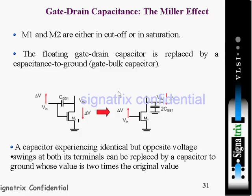You can see this gate-to-drain capacitance and the Miller effect. They are showing how with the help of the Miller effect we can calculate the effective capacitance. So M1 and M2 are either in cutoff or in saturation region.